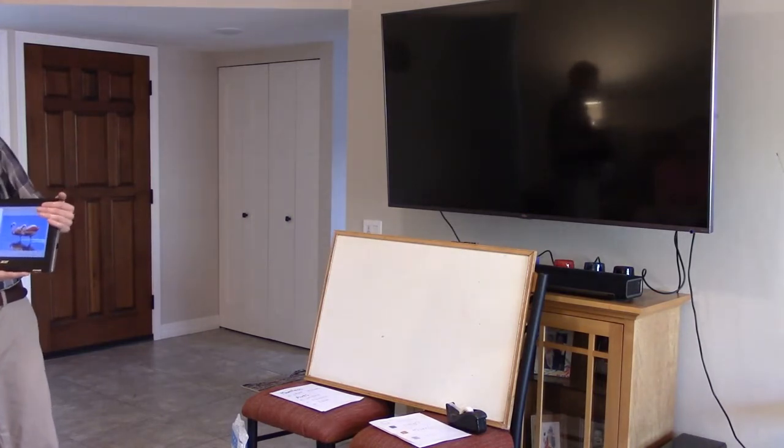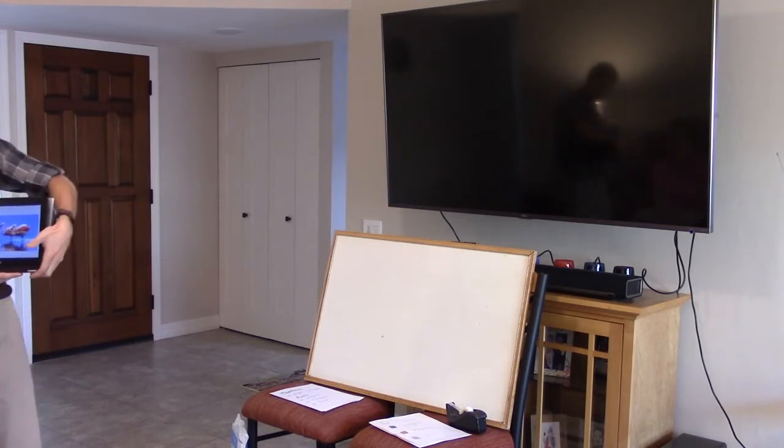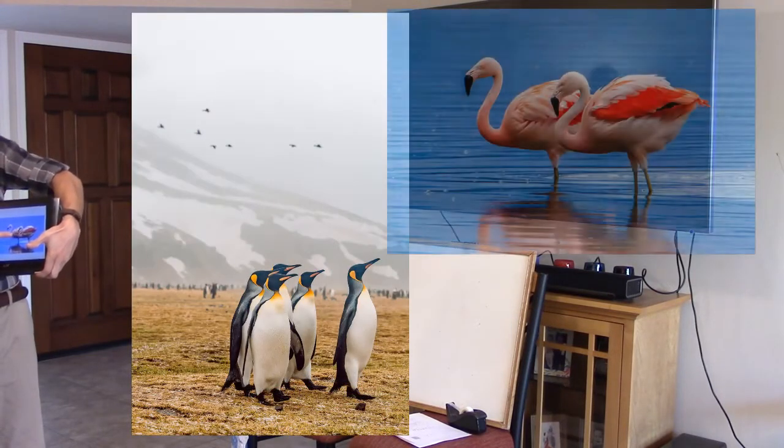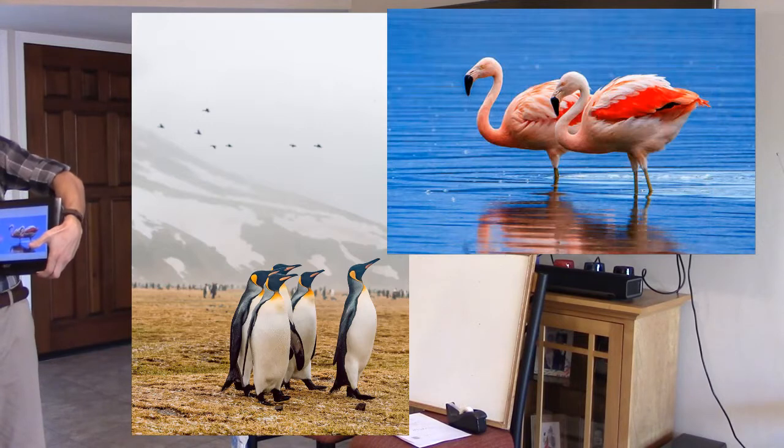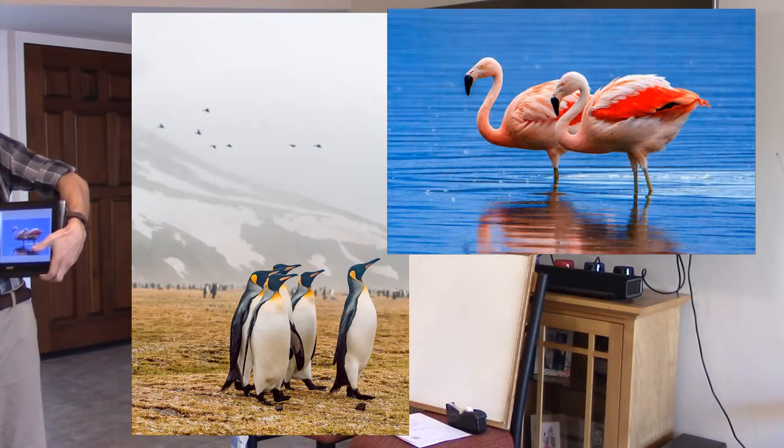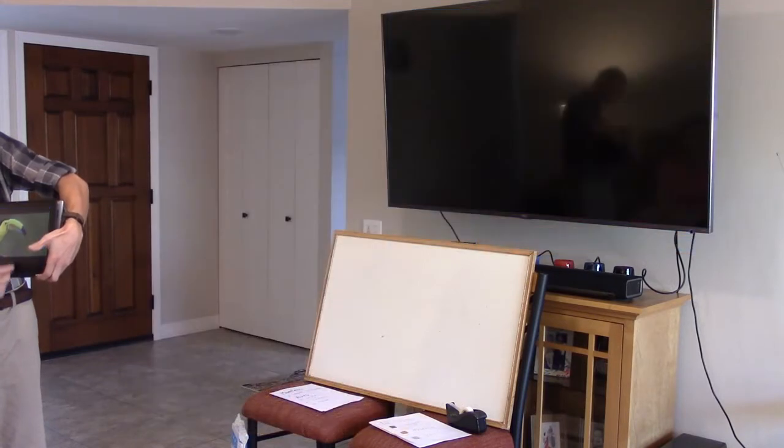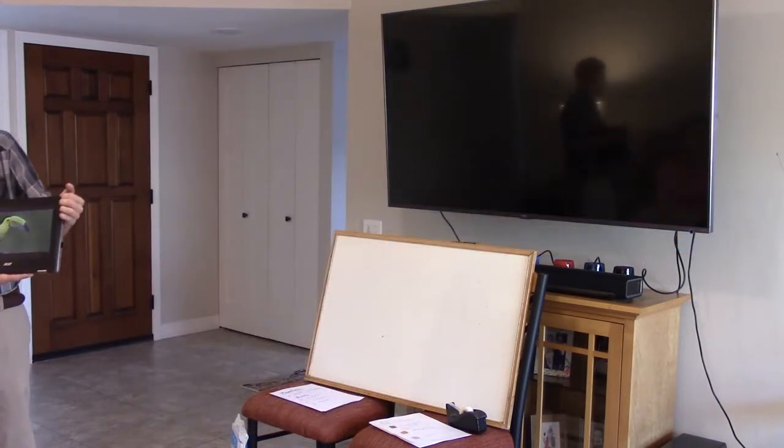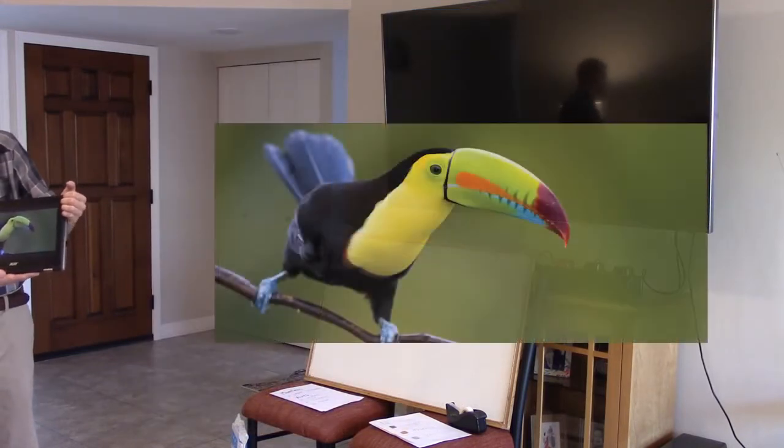Here we have some birds, aves. So, pingüinos, flamenco. Flamenco rosado. Pengüino tiene blanco, negro, anaranjado. And what are some colors that you guys see here? Just in English, just call out. What are some colors you see on this toucan?